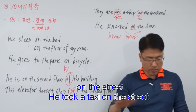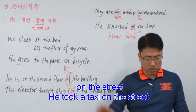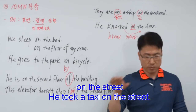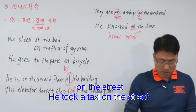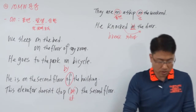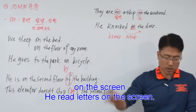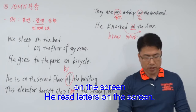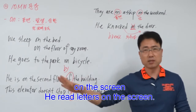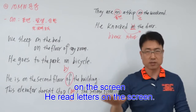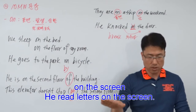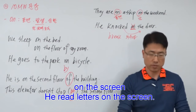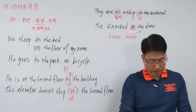On the street — 표면인데 거리 표면이다 그런 얘기고요. He took a taxi — 잡았다 택시 잡았고요. 표면인데 거리 표면에서 잡았다 그런 얘기고요. On the screen — 표면인데 스크린 표면이다라는 뜻이고요. He read — 그가 읽었다. 읽은 게 letters 글자들이고 글자들이 on the screen 스크린 표면에 있었다 그런 뜻입니다.